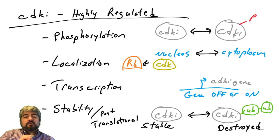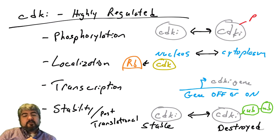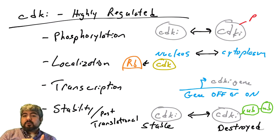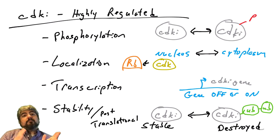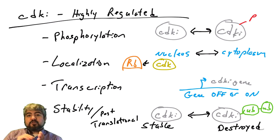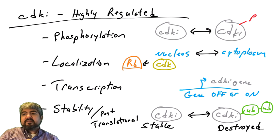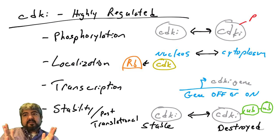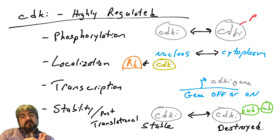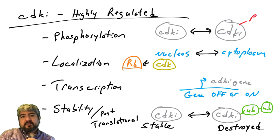Lastly, CDK inhibitors can be regulated at the post-translational level through stability. Ubiquitylation can send CDK inhibitor proteins to the proteasome for destruction. When cells want to move through the cell cycle, they destroy CDK inhibitors via ubiquitylation. When cells want to halt the cell cycle, they stabilize CDK inhibitors by not ubiquitylating them. In the next video, we'll see specific examples of each of these regulatory mechanisms.